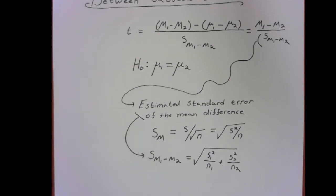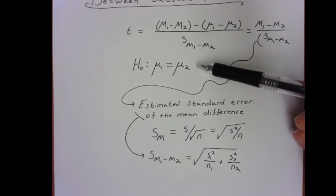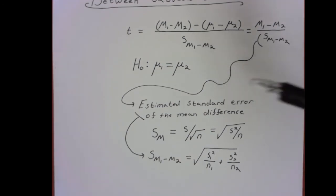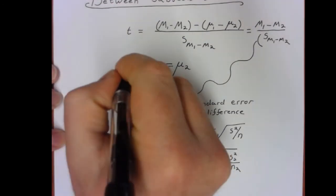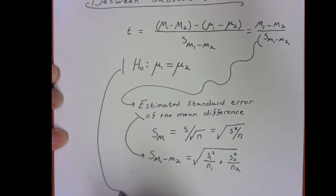Then we still have the same compare the observed statistic to a critical value to see if it falls in the critical regions to determine whether or not we end up rejecting this null hypothesis and accepting the alternative that these two samples came from populations whose means were not equal.